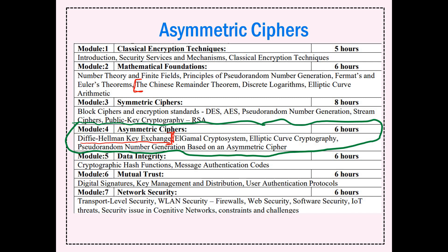Let us start for the day. As I already mentioned, we had done with the third module. I have marked few segments which are to be taught for the syllables for CAD2. It starts with the Chinese remainder theorem, discrete logarithmic, elliptic curve arithmetic. Then the whole of the third module which we have discussed with respect to DES, AES, stream cipher and RSA.